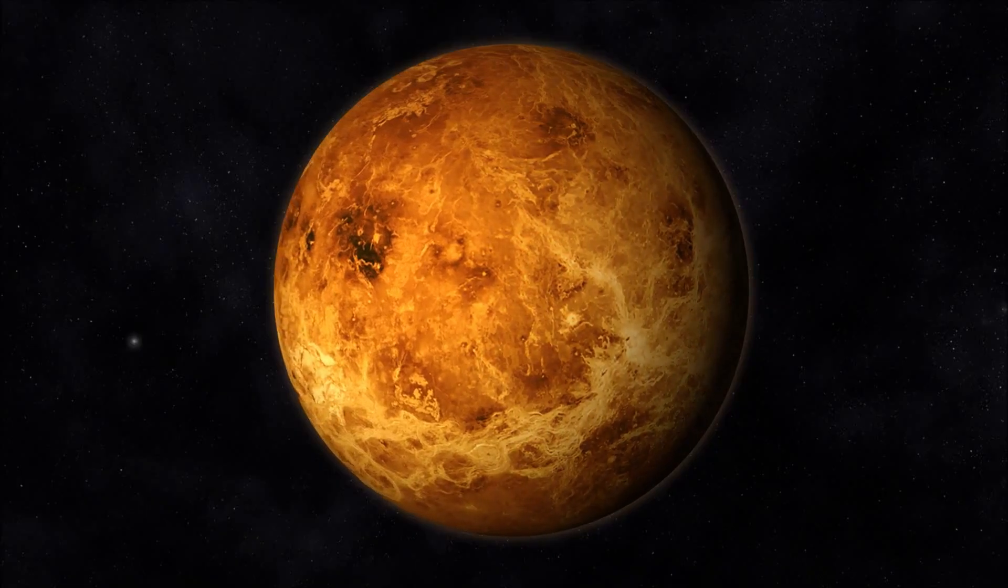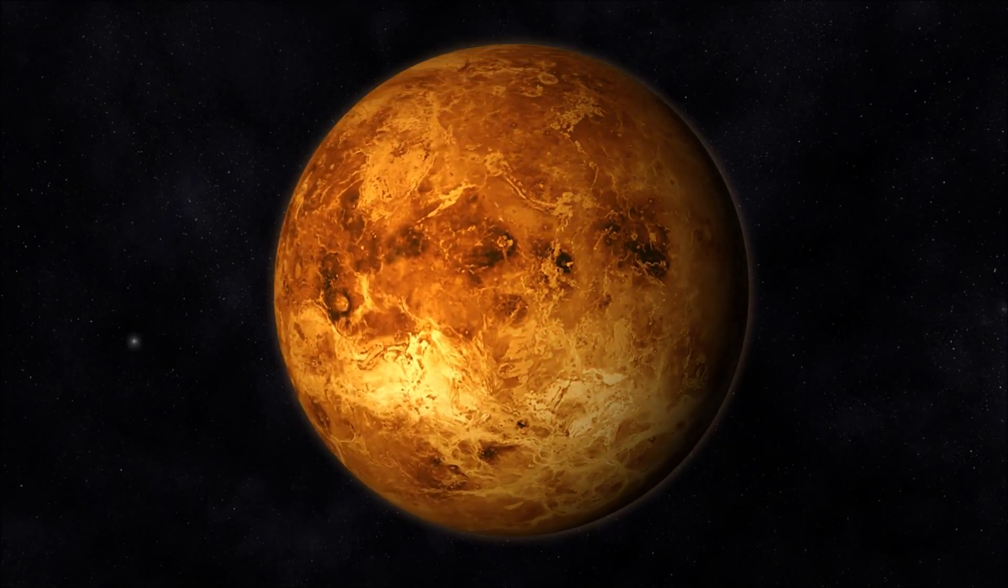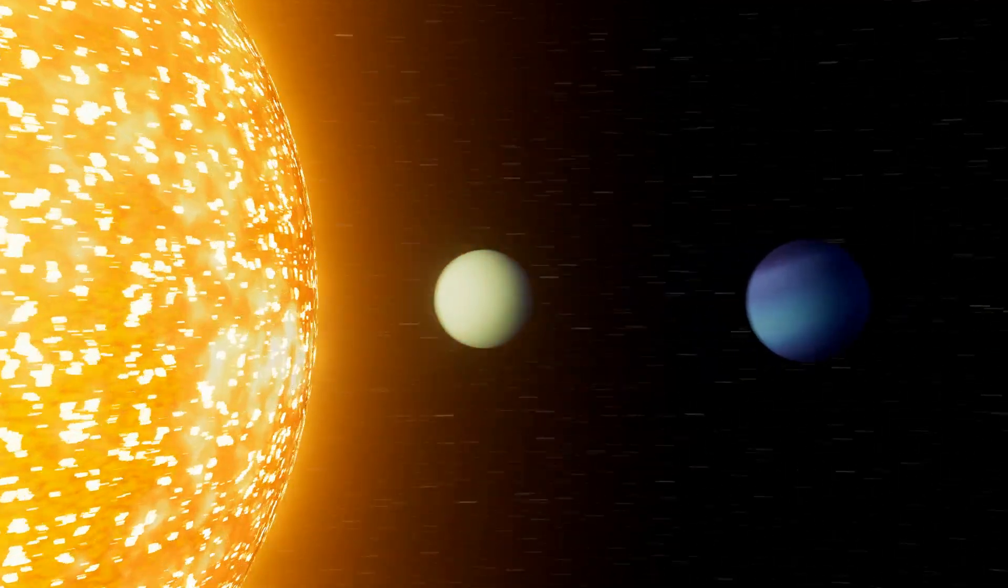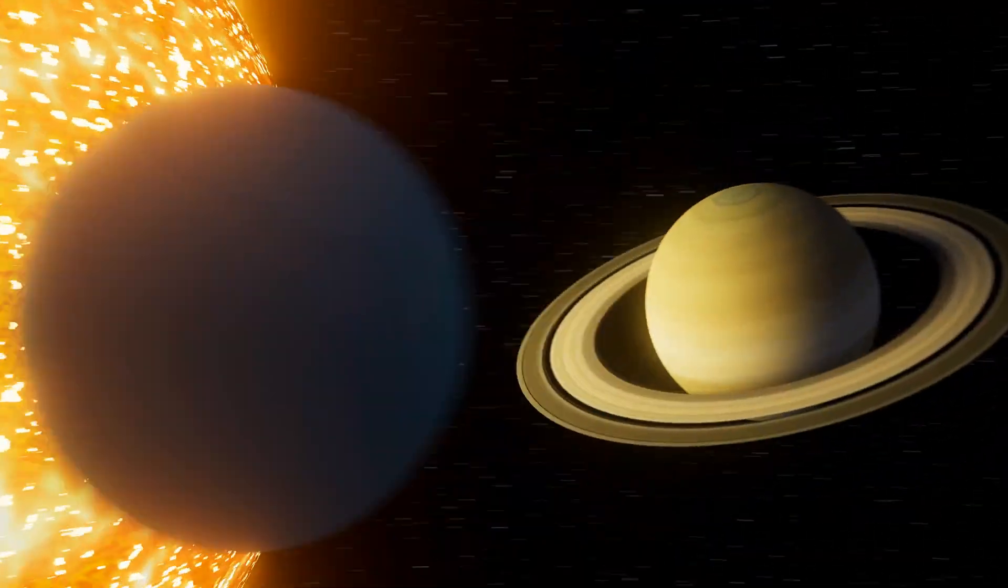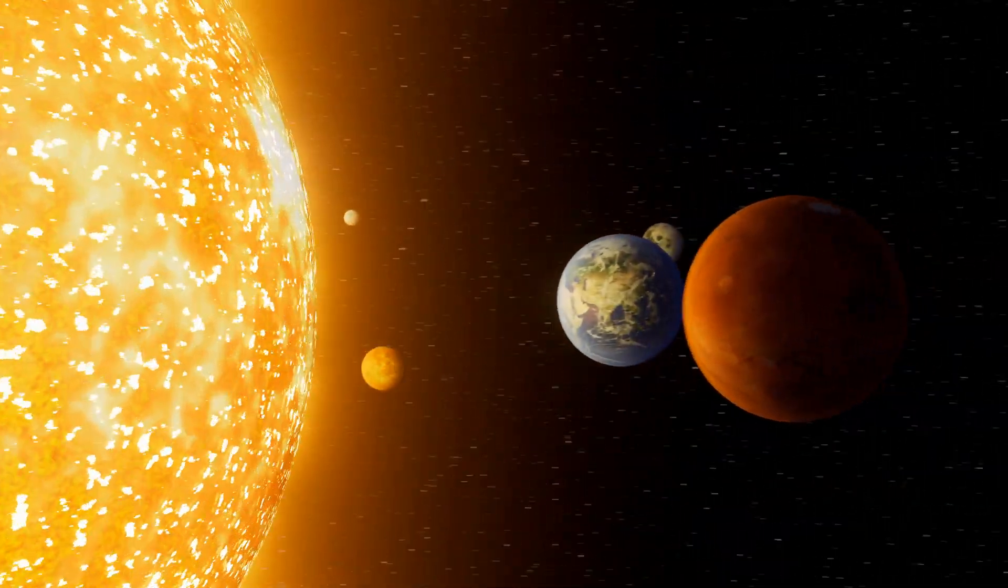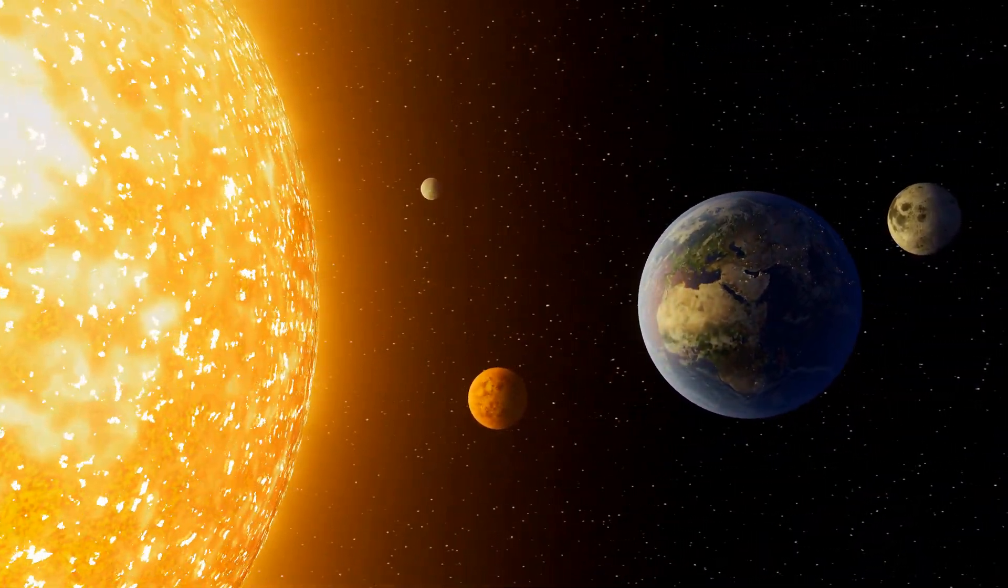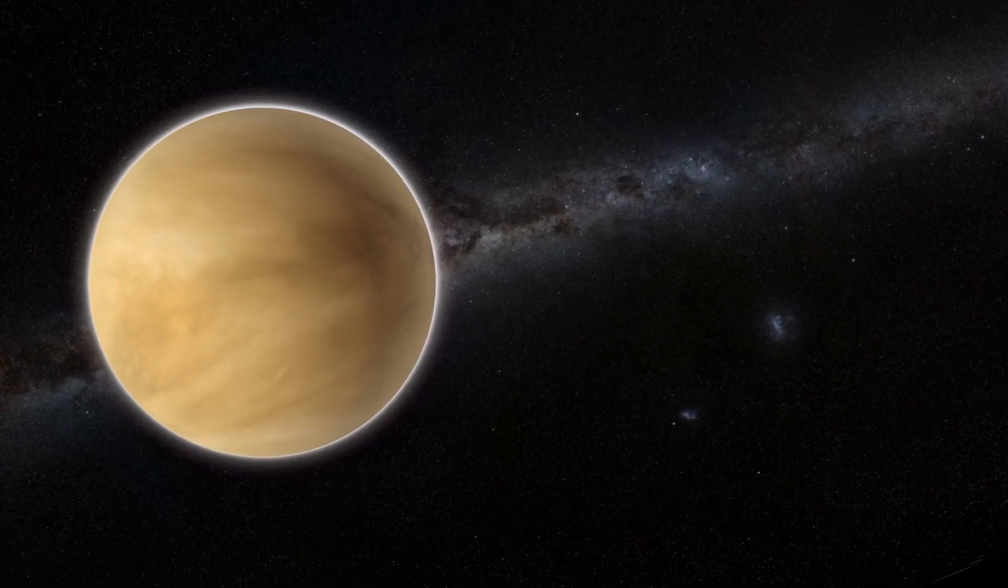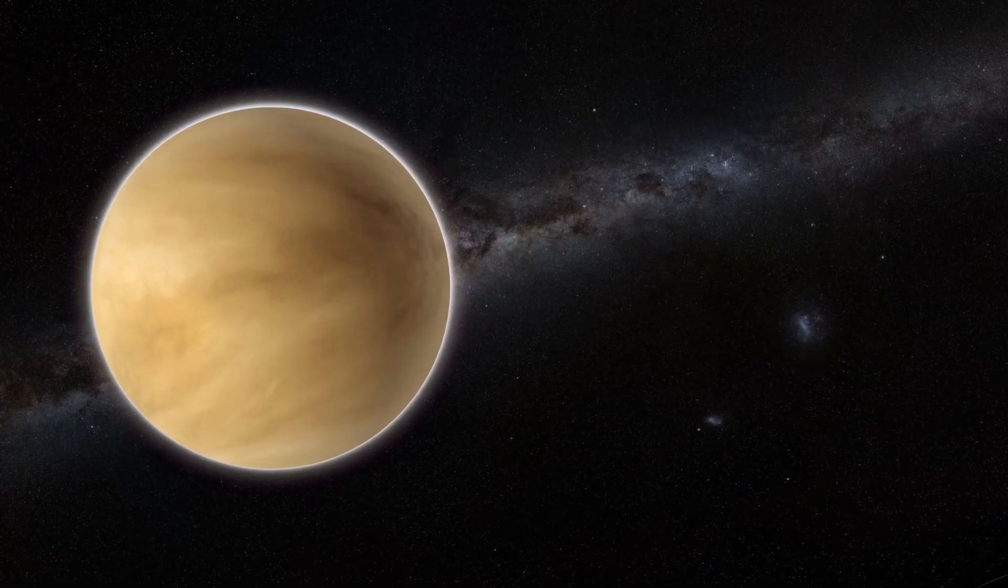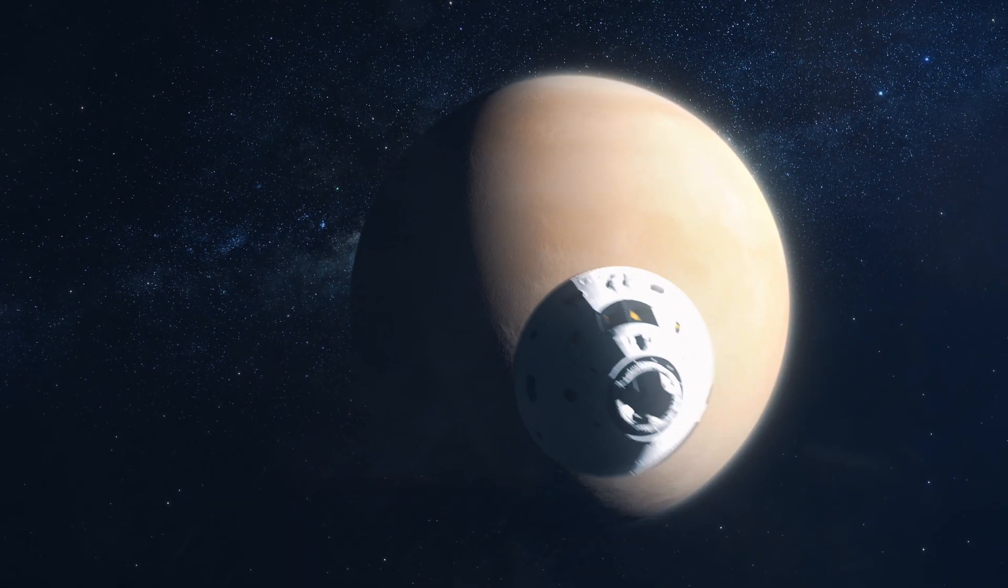Time works weird on Venus. One day, one full spin on its axis takes 243 Earth days. But a full orbit around the sun, its year, takes only 225 Earth days. That's right. A Venusian day is longer than its year. Oh, and it spins backwards. The sun rises in the west and sets in the east. Basically, Venus is doing donuts in space with no regard for the rules.